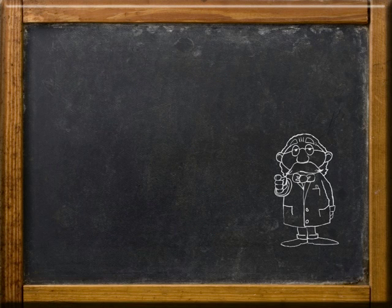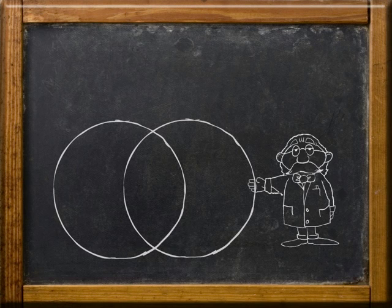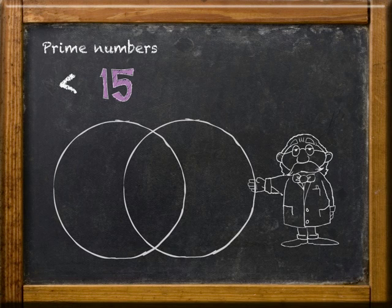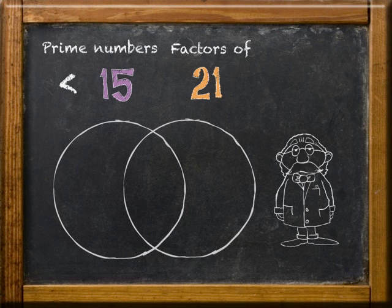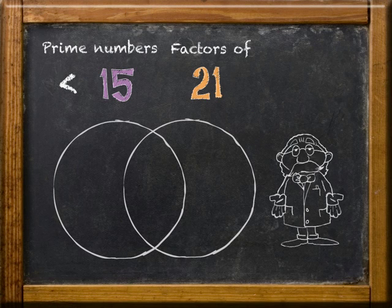Are you ready for some practice? Label the left circle prime numbers less than 15 and the right circle factors of 21. Place all the prime numbers less than 15 into the left circle and all the factors of 21 into the right circle. Don't forget that any shared numbers will go into the overlapped area of the two circles.